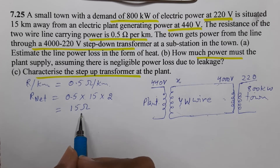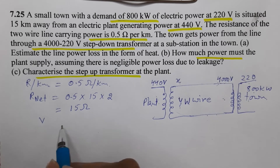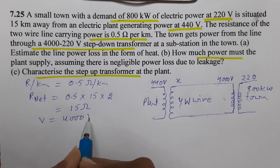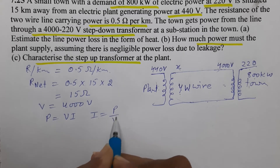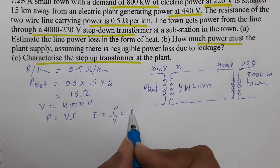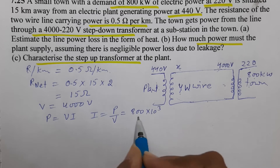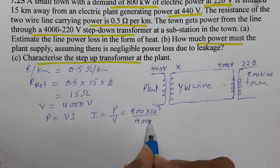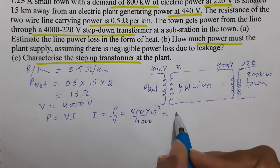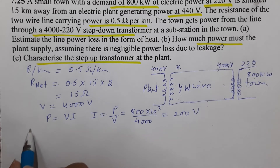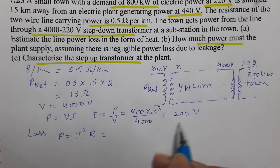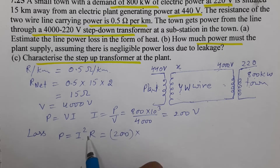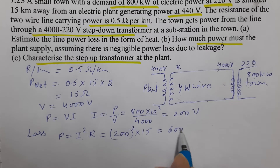The voltage supply at the line is 4,000 volts. Using the power formula P = VI, the current I = P/V = 800×10³ / 4000 = 200 amperes. Now we calculate the power loss: P_loss = I²R = 200² × 15 = 600 kilowatts. This means 600 kilowatts is lost as heat in the transmission wire.